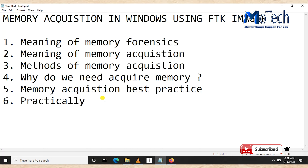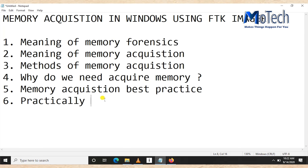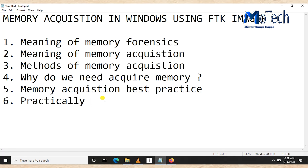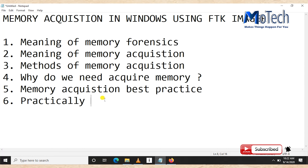The methods of memory acquisition include: raw format, crash dump, hibernation file, page file, and VMware snapshot. In this video we are going to use raw format. Those are the methods of memory acquisition.